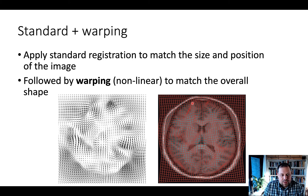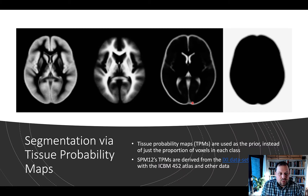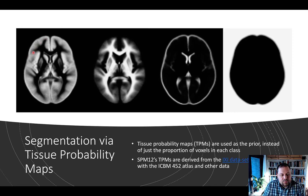There are a lot of non-linearities involved in this to eventually map the overall shape. The new method allows us to use much more information available via tissue probability maps. They use a distribution of different classes of tissue types that are generally distributed in similar fashions across brains, including gray matter, white matter, and cerebrospinal fluid — which surrounds the brain and fills fluid spaces within it.